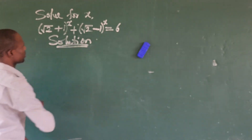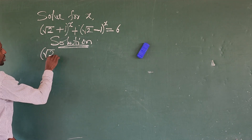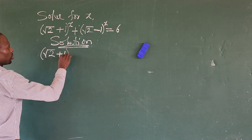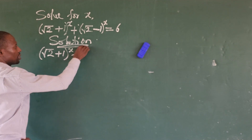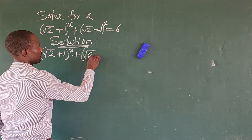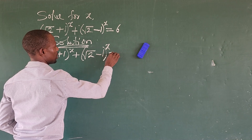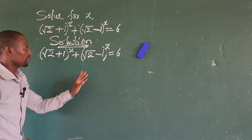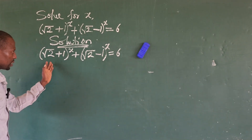First, let's take down our question. The equation is: (√2 + 1) to the power of x plus (√2 - 1) to the power of x equals 6. Now if you look at this question...